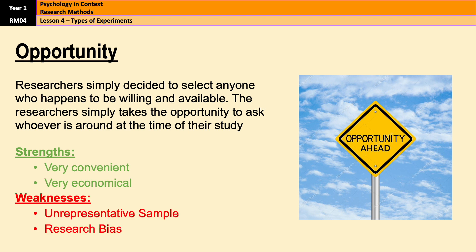However, a limitation of opportunity sampling is that it often leads to bias because it's likely that the sample is going to be unrepresentative of the target population. For example, people who shop at a particular shopping centre might not necessarily represent all consumers, as they probably all have something in common. If you're standing there asking people in the middle of the day, you might find a higher proportion of retired people, because those who aren't retired are probably at work — and that would give you a biased sample.